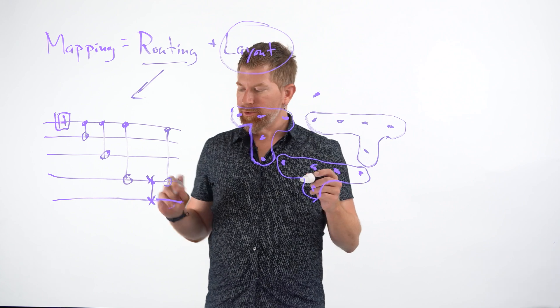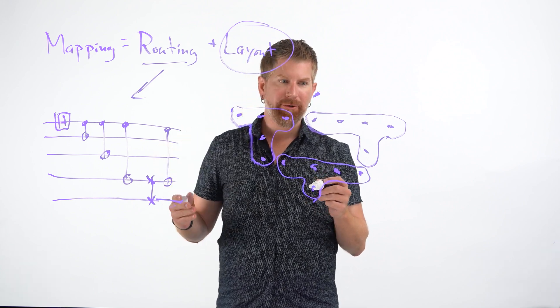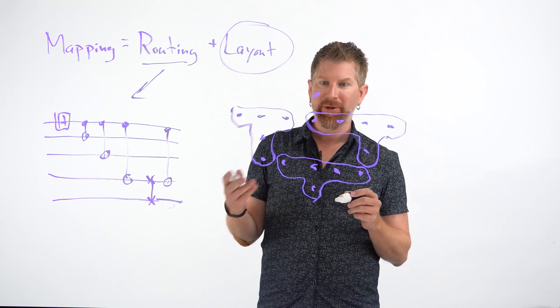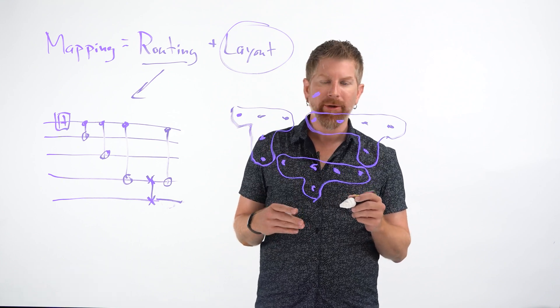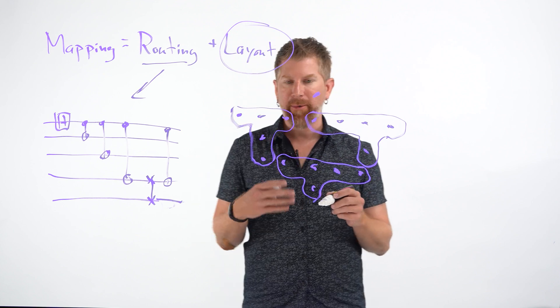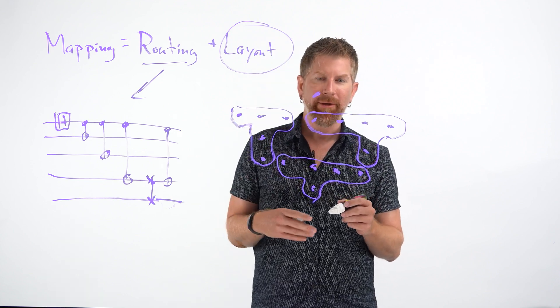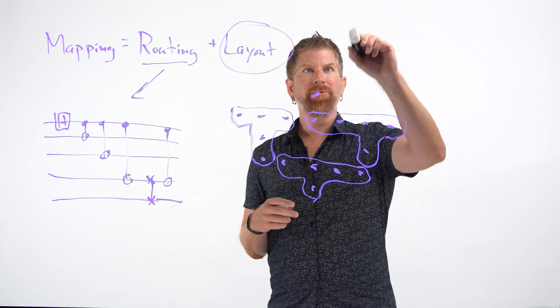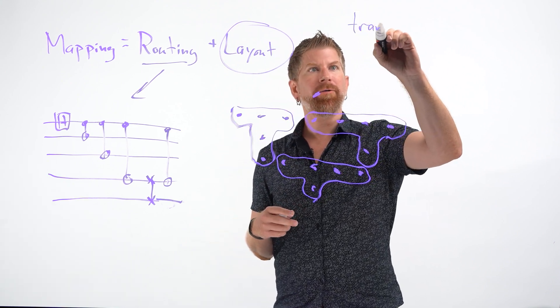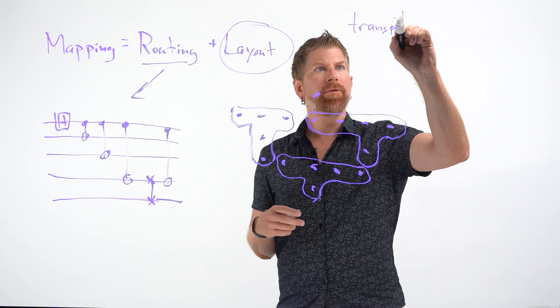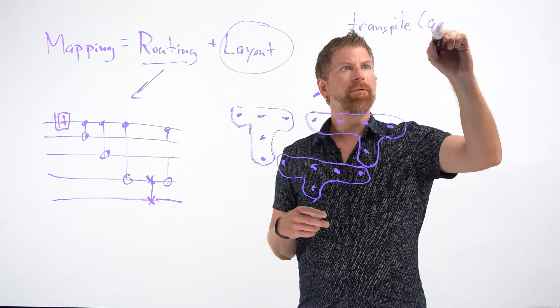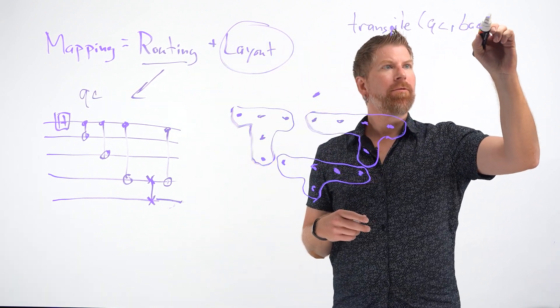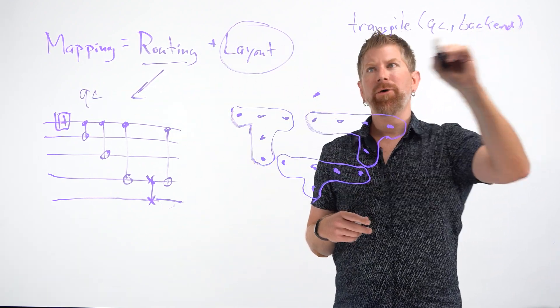So because of that, I need to do some further transpilation. And the way we're going to do this today is I'll transpile it to a particular backend. And then I'm going to look at my possibilities using something called the VF2 subgraph isomorphism program. So the first thing we'll do is transpile our circuit to our backend.